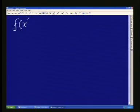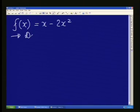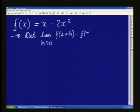They give us a function. They say f of x is given as x minus 2x squared. And they ask us the first question for six marks is to determine the limit when h approaches 0 of f of 2 plus h minus f of 2 divided by h.